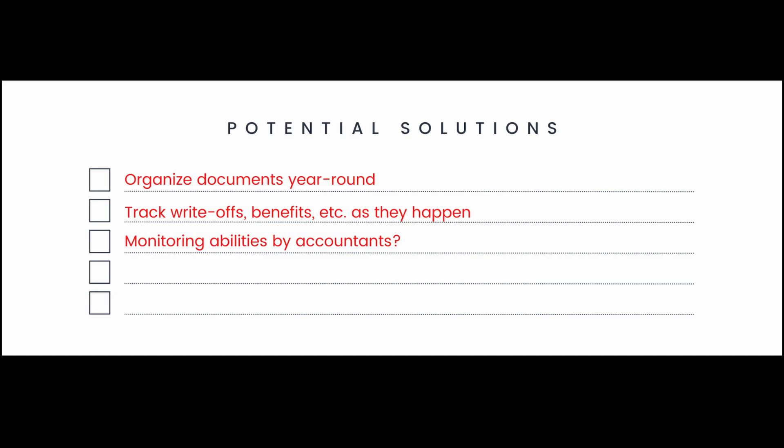Next, you can start exploring solutions — but hear me out, I'm speaking generally. Don't start thinking about specific features or whether you're going to make an app or a website. Be really general with your potential solutions. In my case, what could solve the problem is a way to organize documents throughout the year so it's not one big overwhelming task, or finding a way to easily track write-offs and benefits throughout the year. Looking for business opportunities is also a good idea, because as a UX designer you're going to be working for a business whose goal is usually to make money. But if it doesn't come naturally, don't do it — don't do anything just to go through the motions, or it'll seem forced.